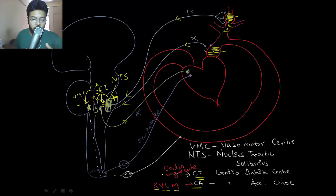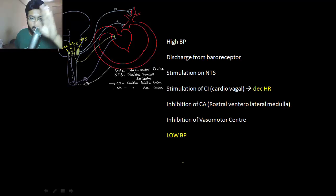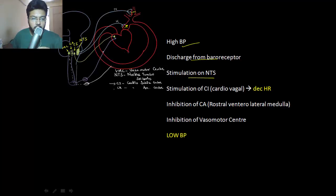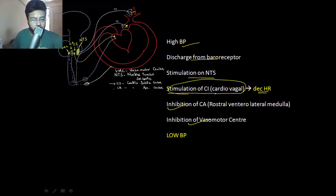Let's review rapidly. With high blood pressure, there is more firing of the ninth and tenth nerve — discharge from baroreceptor stimulation of nucleus tractus solitarius. This stimulates the cardio inhibitory center or cardio vagal center, which decreases heart rate. Inhibition of the cardio-acceleratory and vasomotor center results in low BP. Now, a question: what if you clamp your carotid artery?